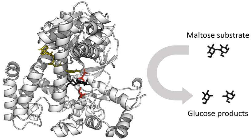To explain the observed specificity of enzymes, in 1894 Emil Fischer proposed that both the enzyme and the substrate possess specific complementary geometric shapes that fit exactly into one another. This is often referred to as the lock-and-key model. This early model explains enzyme specificity, but fails to explain the stabilization of the transition state that enzymes achieve.